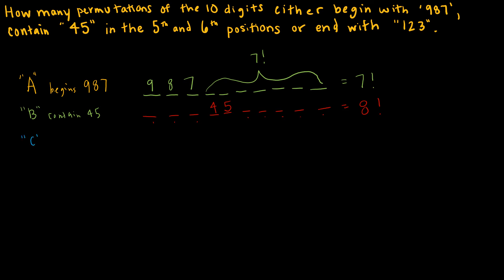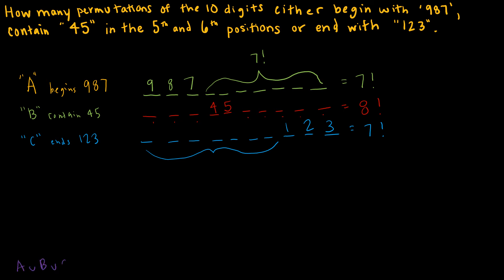Set C is the condition that it ends with 1, 2, 3. With 1, 2, 3 fixed in the last three positions, I have 7 remaining positions to permutate, giving 7 factorial. So in my formula for A∪B∪C, I start by adding 7! + 8! + 7!.